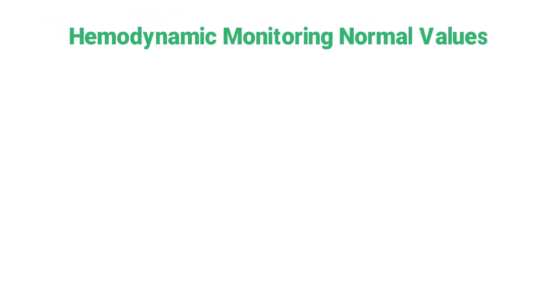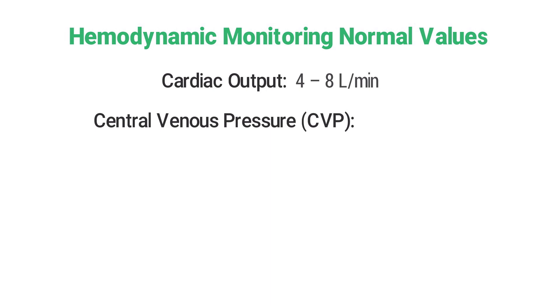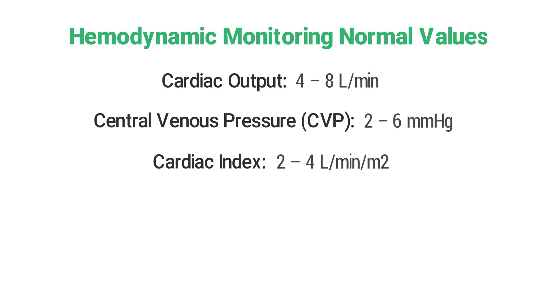Next we're going to talk about hemodynamic monitoring normal values. First up is cardiac output, and the range should be four to eight liters per minute. Then you have CVP, or central venous pressure, which is two to six millimeters of mercury. The normal cardiac index is two to four liters per minute per meter squared.